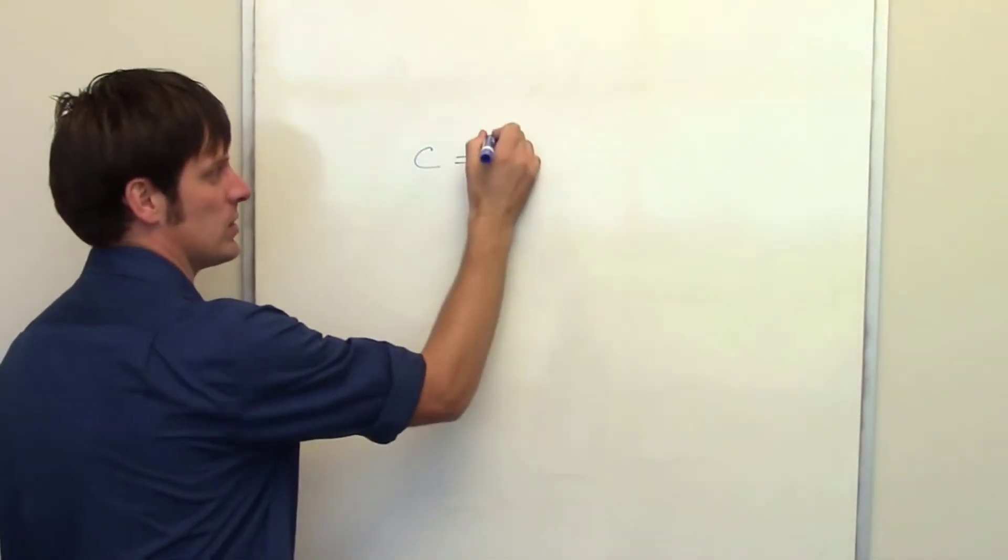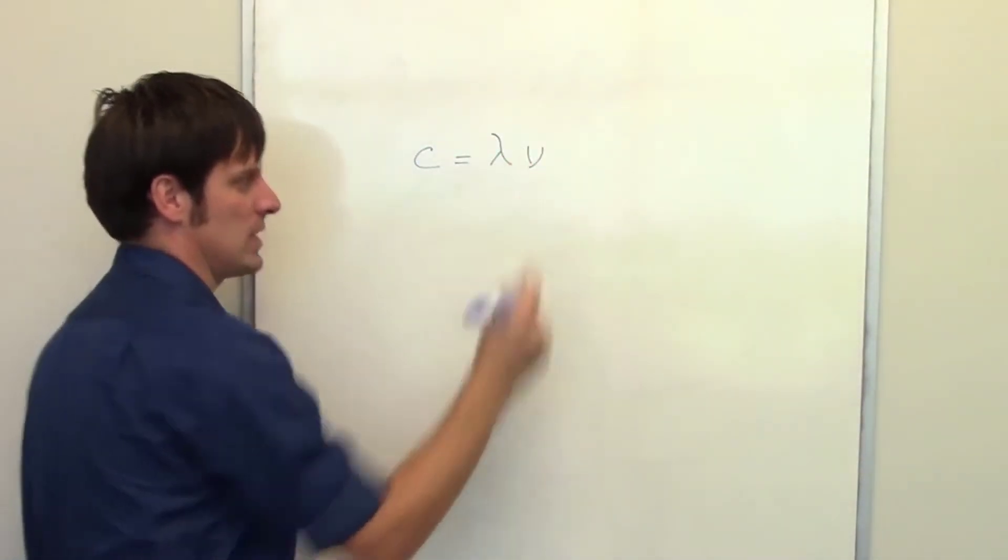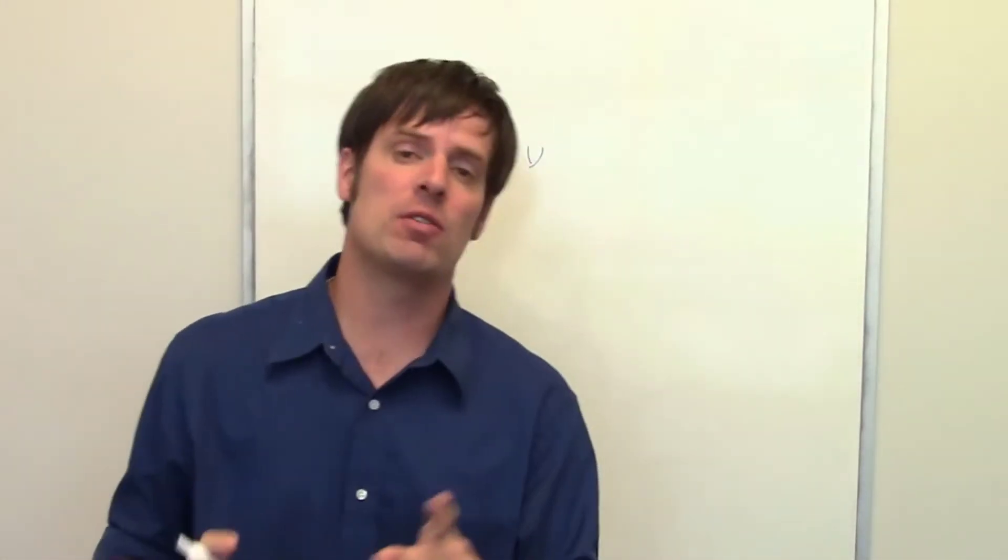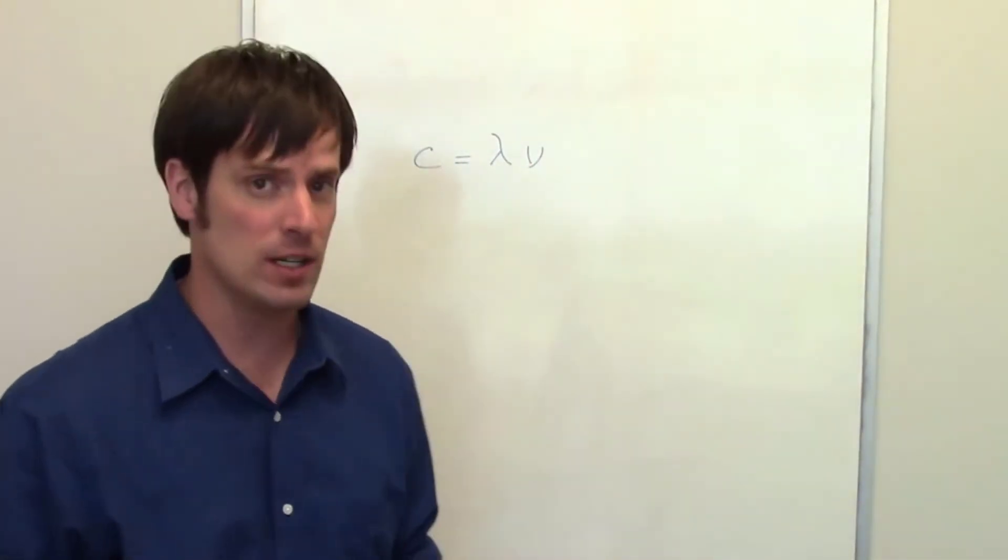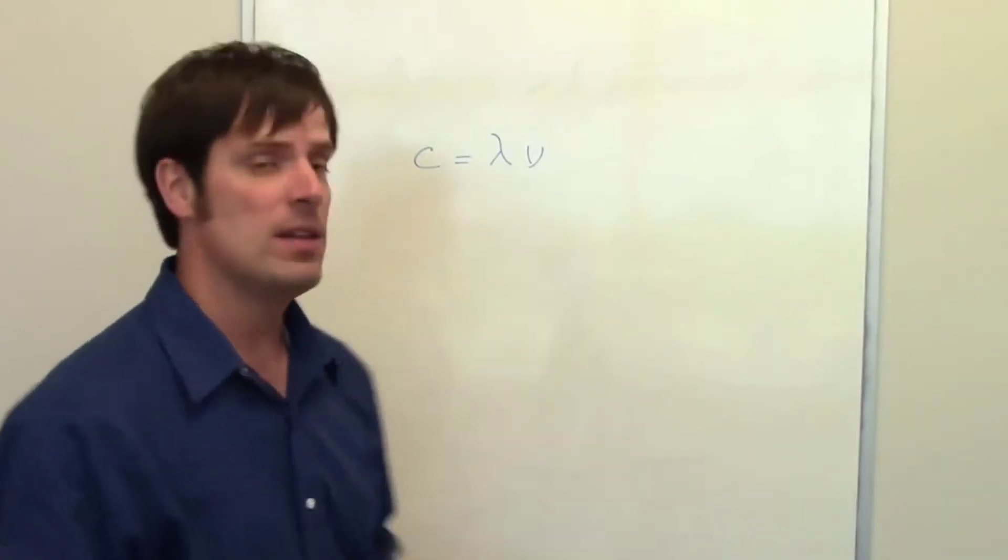The speed of light equals wavelength times frequency. That equation is only possible because all forms of electromagnetic radiation travel at the same speed, the speed of light.